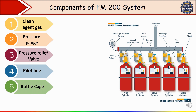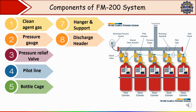The next component is the bottle cage, which provides physical protection and proper arrangement of cylinders to prevent damage and ensure safety during storage and discharge. Hangers and supports ensure that the system piping and cylinders are firmly mounted, stable, and properly aligned to deliver the gas effectively. The discharge header is a piping component that connects multiple cylinders in a system, directing the flow of gas from multiple FM-200 cylinders into the distribution pipework for discharge across the protected area.